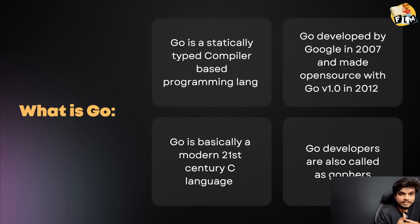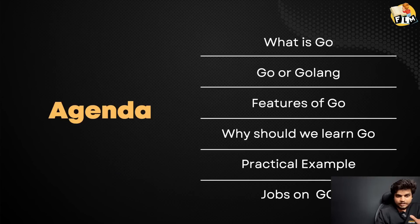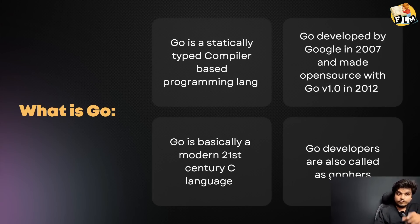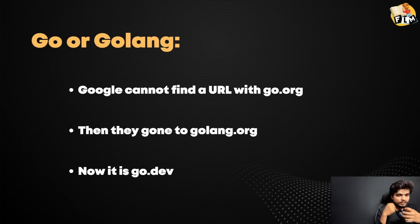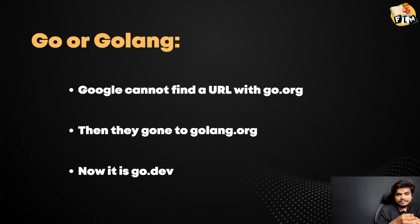Go is basically a modern 21st century C language. We all know that C language is very powerful, and Go language is just as powerful. Many people need to know the difference between Go and Go lang. In the name Go, if you search it as a domain name you can't find anything useful, so the website changed from golang.org to go.dev.